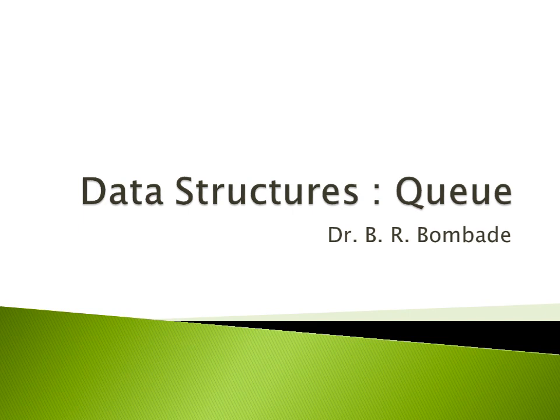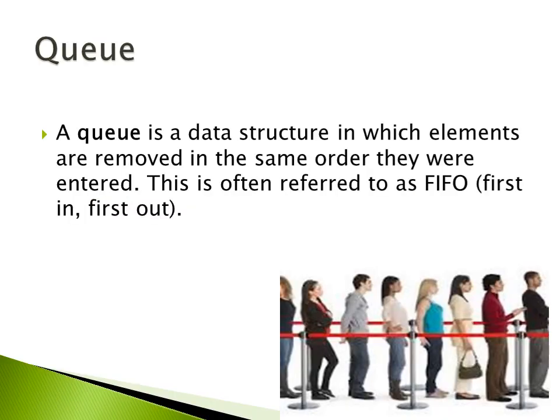Today we will discuss about queues. A queue is a data structure which can be easily implemented using arrays. It has a sequential storage structure with which we can store data in a first-in first-out manner. Queue is a data structure in which elements are removed in the same order as they were entered — this is referred to as first-in first-out methodology.